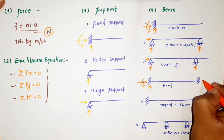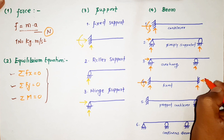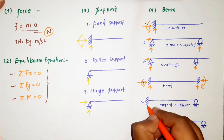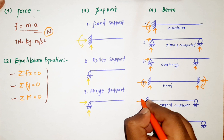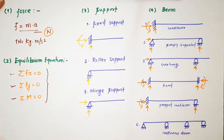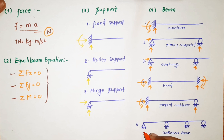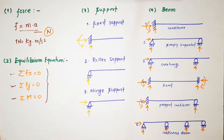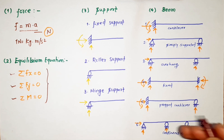For a propped cantilever beam, the fixed support gives three unknowns and the roller gives one unknown, totaling four. For a continuous beam, the hinge gives two unknowns and the roller gives one unknown, totaling five unknowns when all supports are counted.